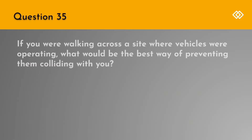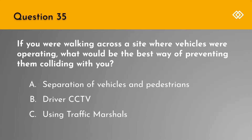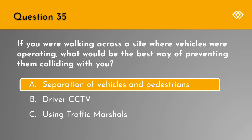Question 35. If you were walking across a site where vehicles were operating, what would be the best way of preventing them colliding with you? A. Separation of vehicles and pedestrians. B. Driver CCTV. Or C. Using traffic marshals. The correct answer is A. Separation of vehicles and pedestrians.